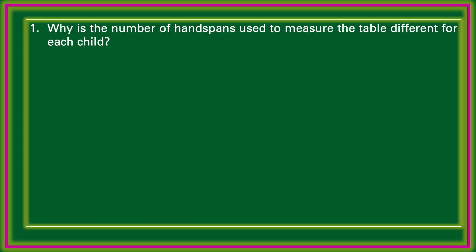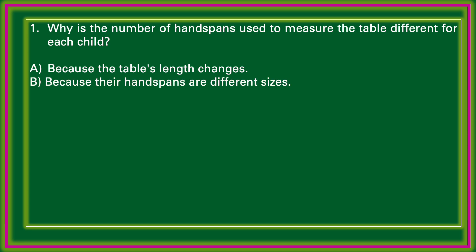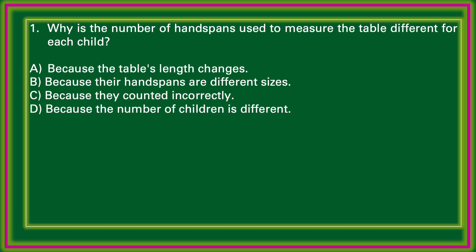First question: Why is the number of hand spans used to measure the table different for each child? Options: because the table's length changes; because their hand spans are different sizes; because they are counted incorrectly; because the number of children is different. The correct answer is: because their hand spans are different sizes.